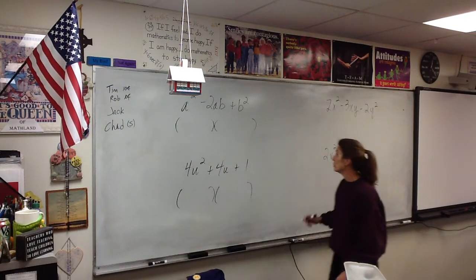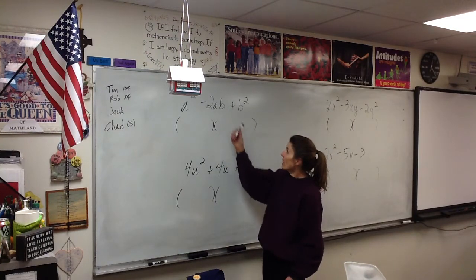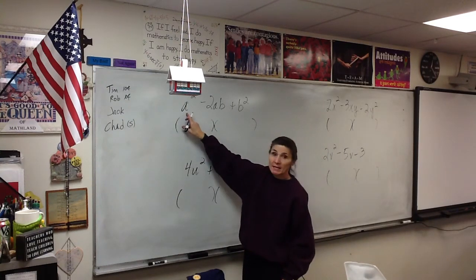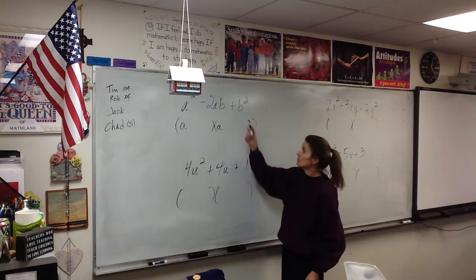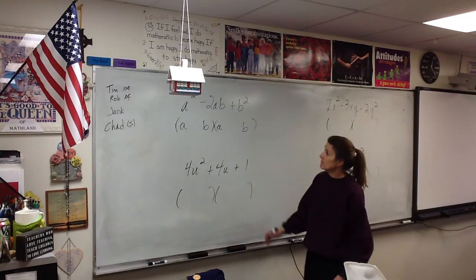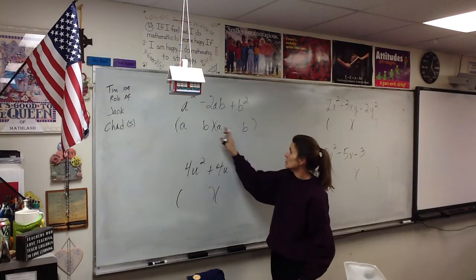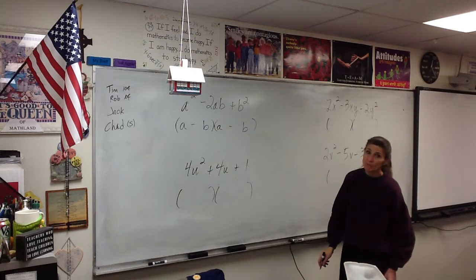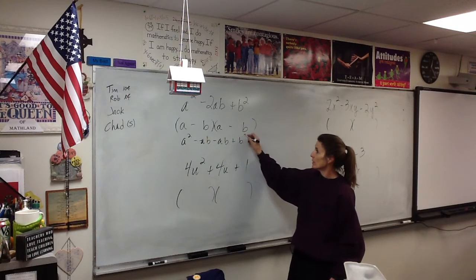These are all trinomials, so ideally they'll factor into two binomials. We know that when we factor it's a reverse FOIL process. Whatever I put in the first spots will multiply to give me a², so that's a and a. Whatever I put in the last spots has to multiply to give me b², so that's b and b. Since there's a positive b squared, these two signs have to be the same — both negative since the middle term is negative. So the answer is (a − b)(a − b), and I can FOIL it back to verify: a² − ab − ab + b².